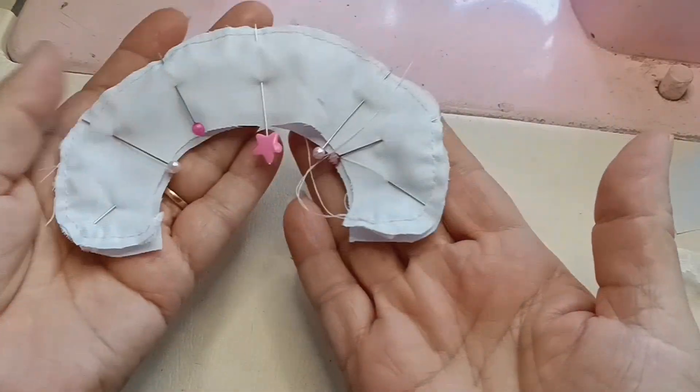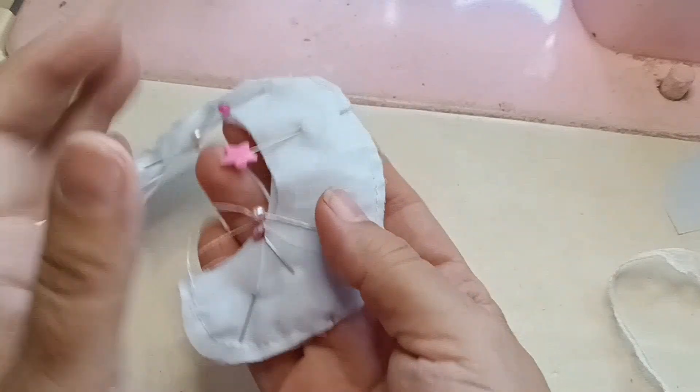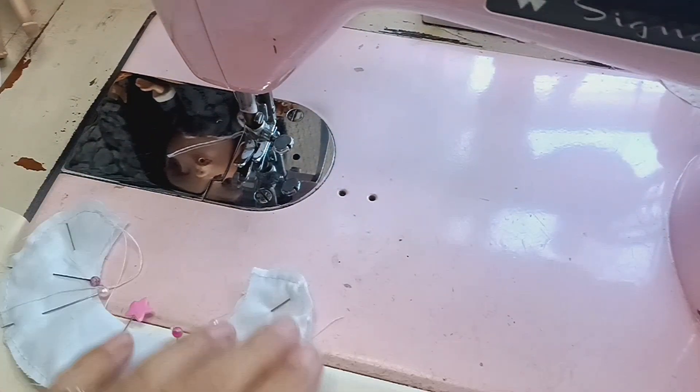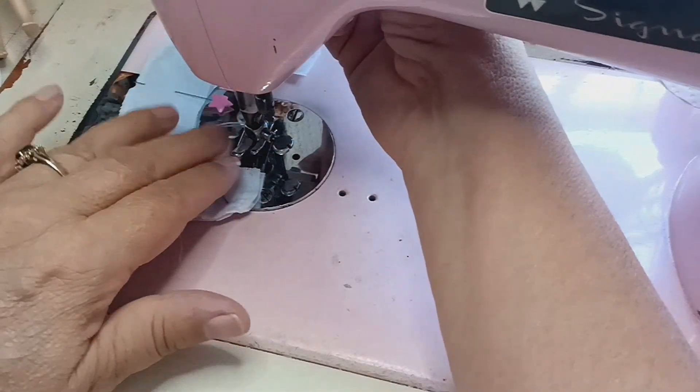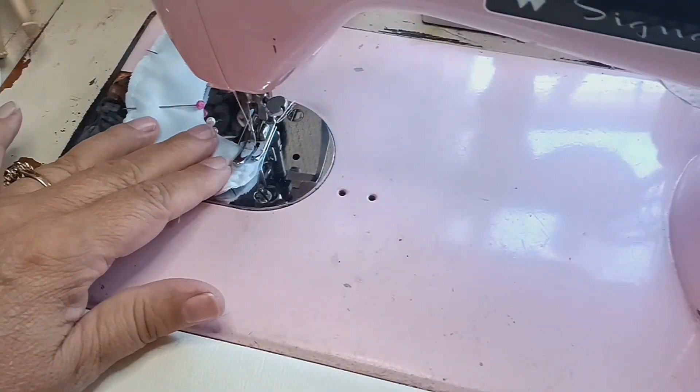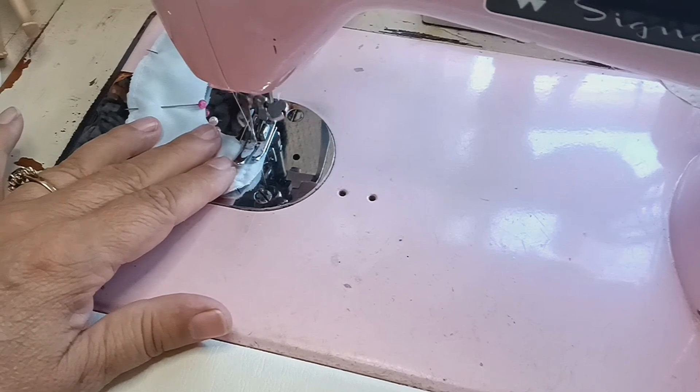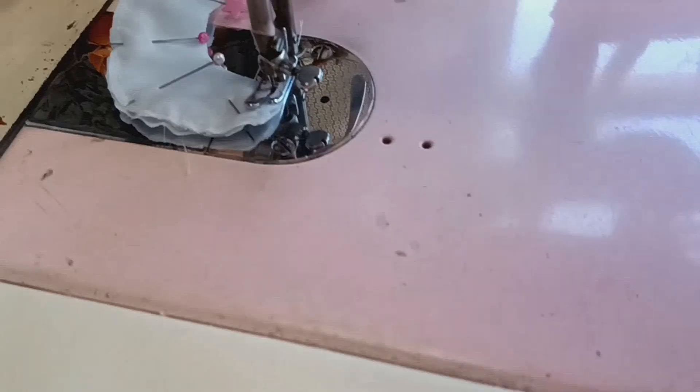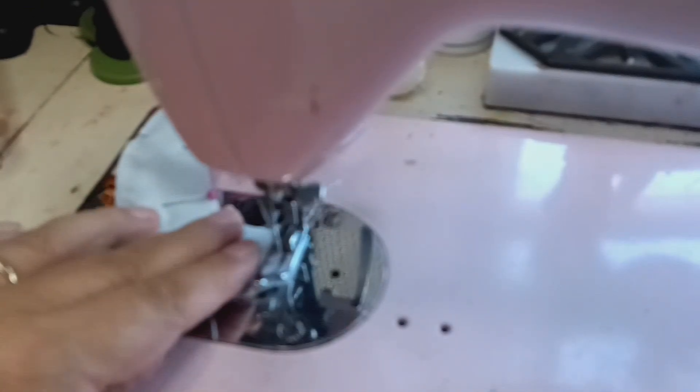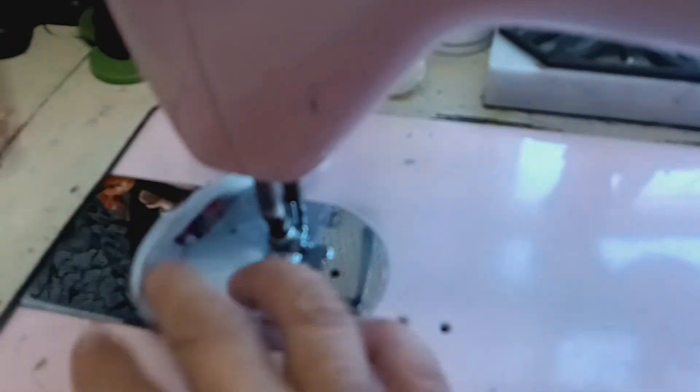Now we're starting to sew. The collar is all pinned up and now we're going to go ahead and sew it. I have the stitch on a medium, it's not loose, so that's the reason why I put too many pins in there to make sure that it'll stay and it's not going to fray.